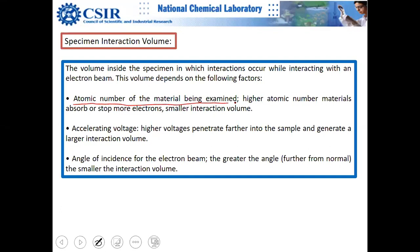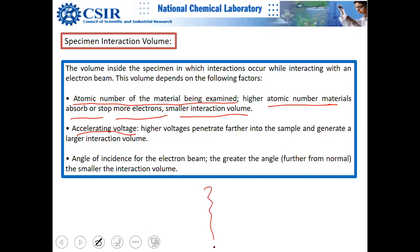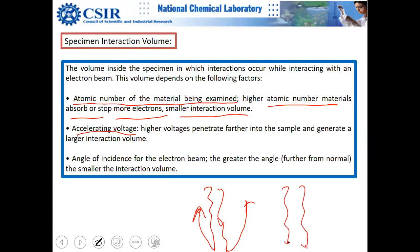Three key factors affect sampling depth: atomic number of the material being examined — higher atomic number materials absorb or stop more electrons, giving a smaller interaction volume; accelerating voltage — higher accelerating voltage allows electrons to penetrate much deeper.